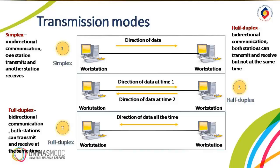Half-duplex is the second type of transmission mode. In a half-duplex mode, each station can both transmit and receive, but not at the same time. When one device is sending, the other one can only receive and vice versa. The half-duplex mode is like a one-lane road with traffic allowed in both directions.